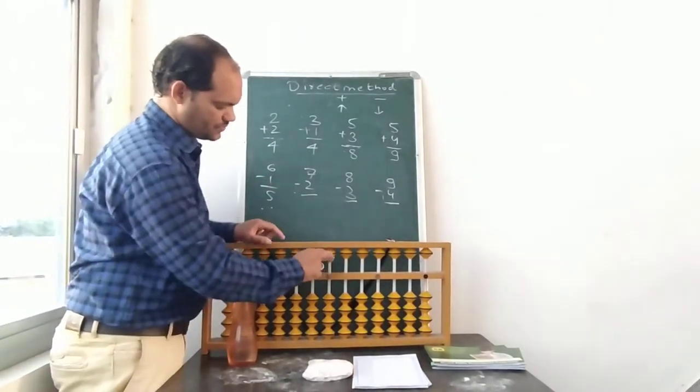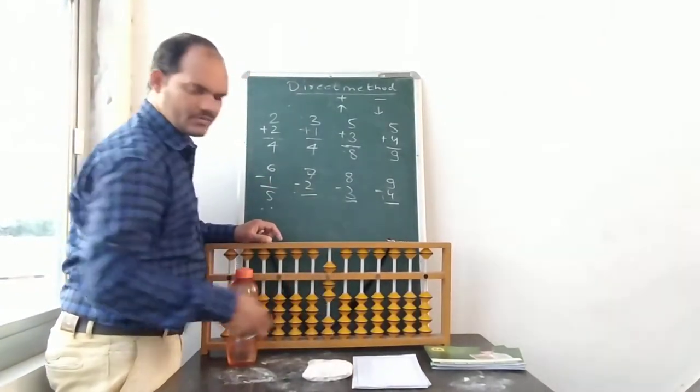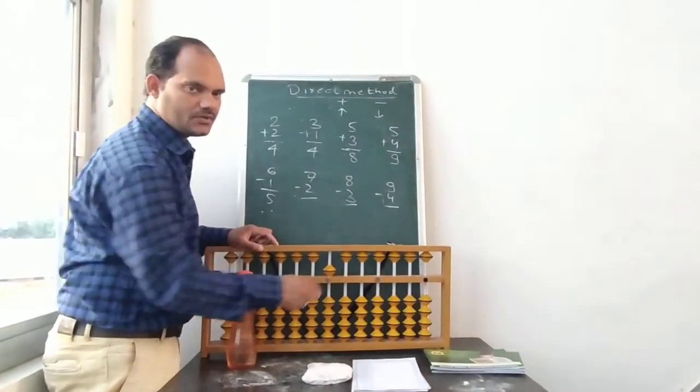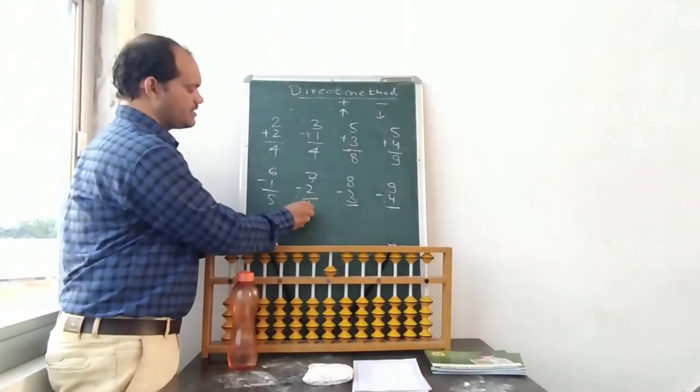Again 7 minus 2. So 7, now minus 2. I will minus from 2 bits down. Now again answer you can see answer is 5.